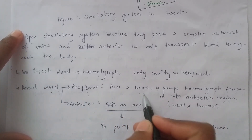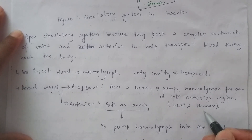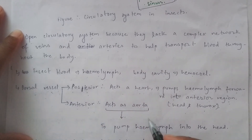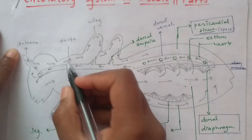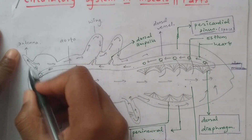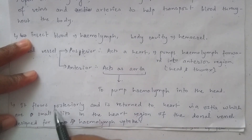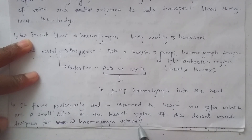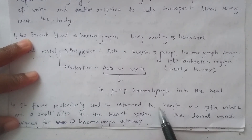The heart functions to pump the hemolymph forward into the anterior region — that is, into the head. The hemolymph then flows posteriorly and is returned to the heart via ostia, which are small slits in the heart region of the dorsal vessel designed for hemolymph uptake.